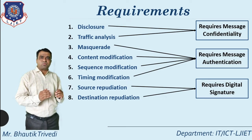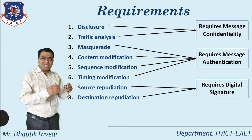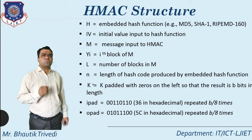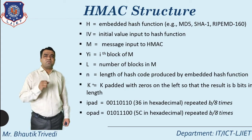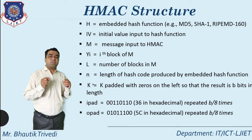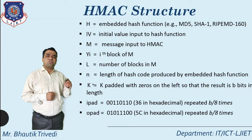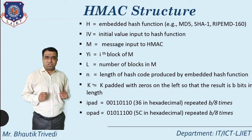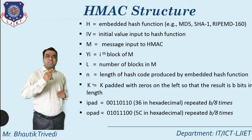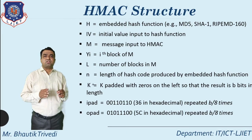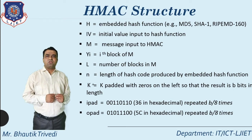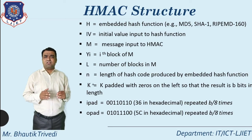Now the most important part: the HMAC structure. Before explaining the diagram, let's understand each parameter. First, H — the embedded hash function. Proper examples are MD5 or SHA-1. Second, IV — the Initializing Vector, also treated as an initial value, which is the input to the hash function.